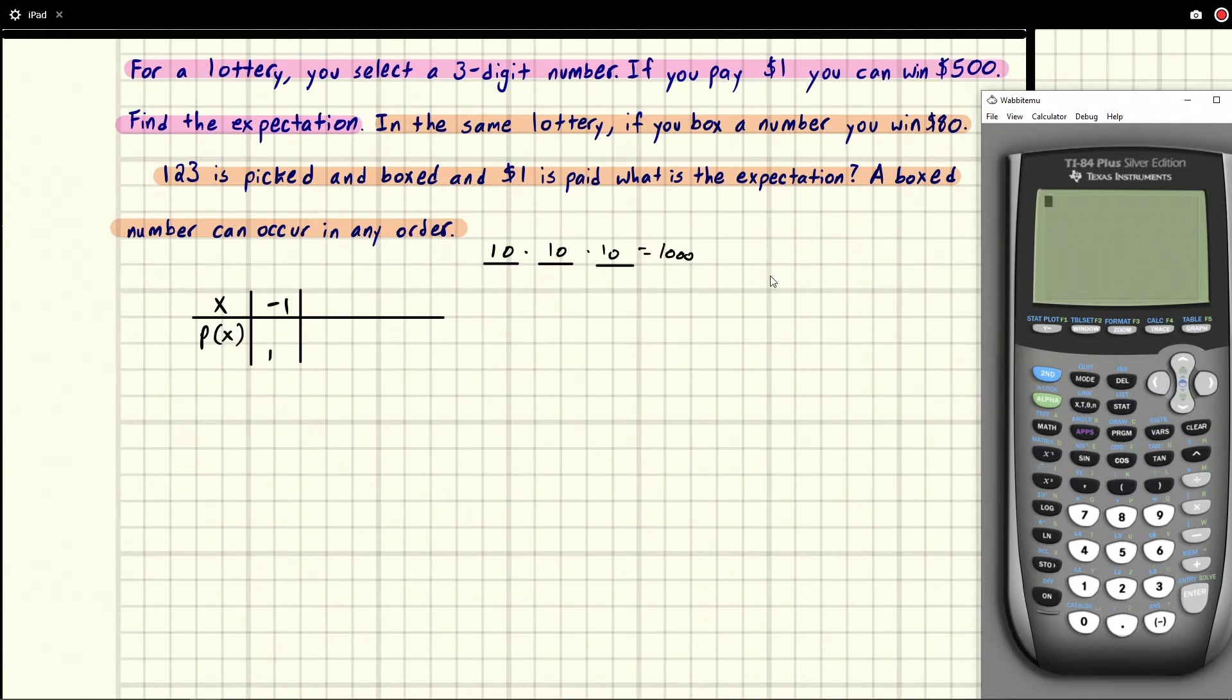So we say 1000. So we say, okay, there's 1000 ways to do it. And how many ways are there to win? Well, there's one way to win, which means that there are 999 ways to lose. So your chances of losing are pretty high.